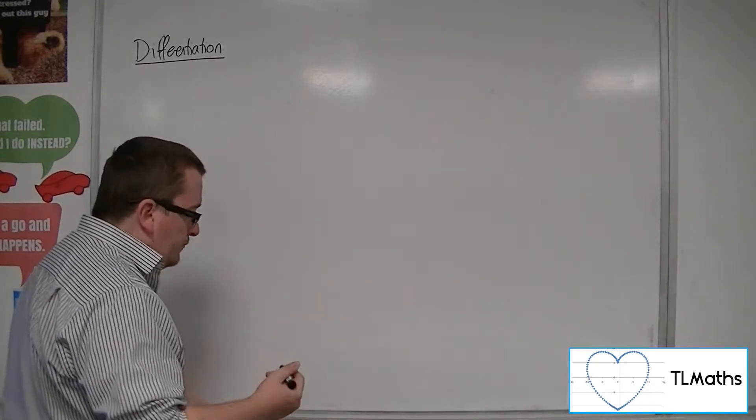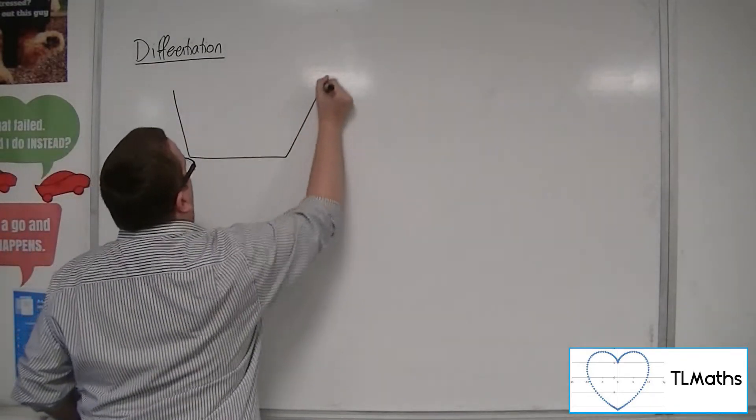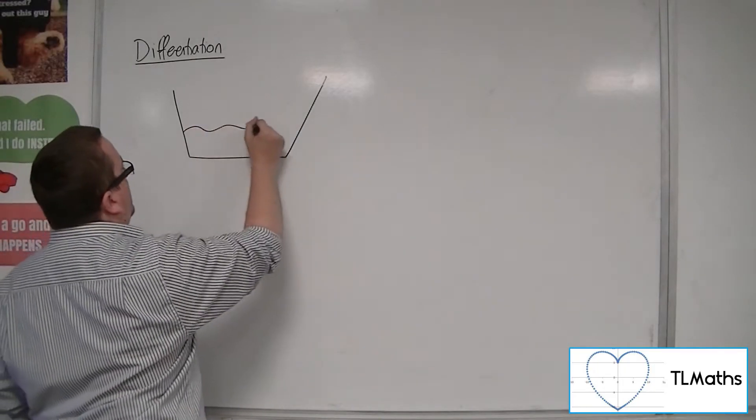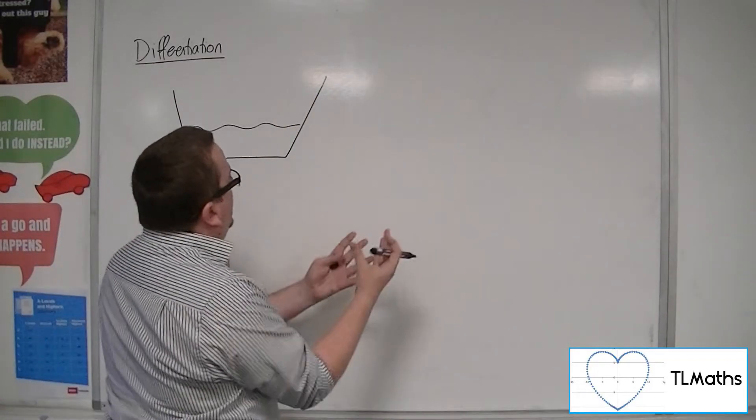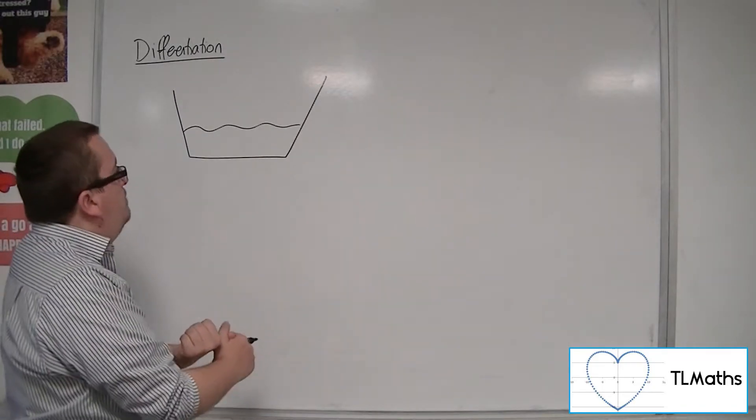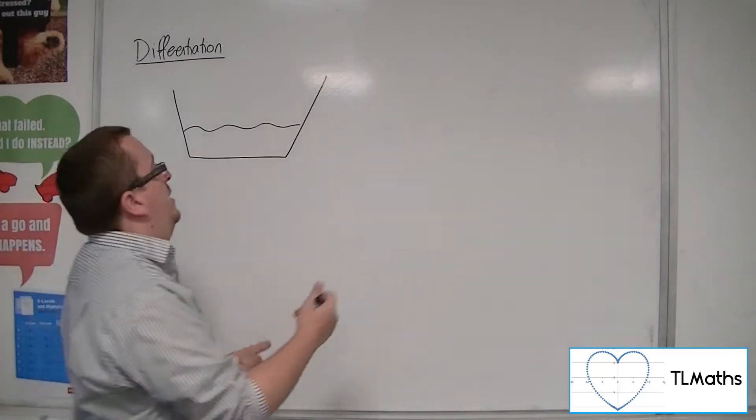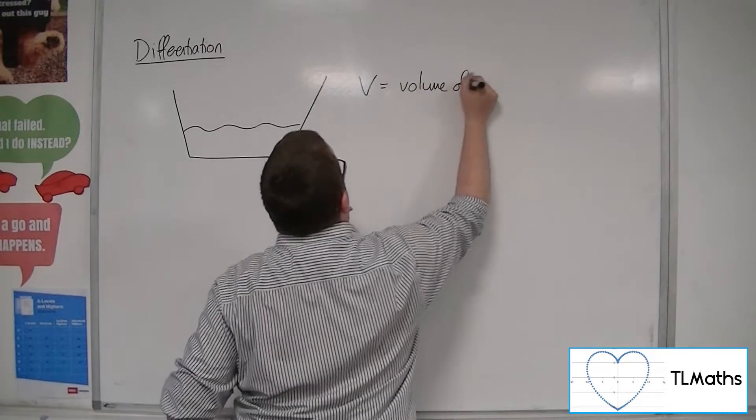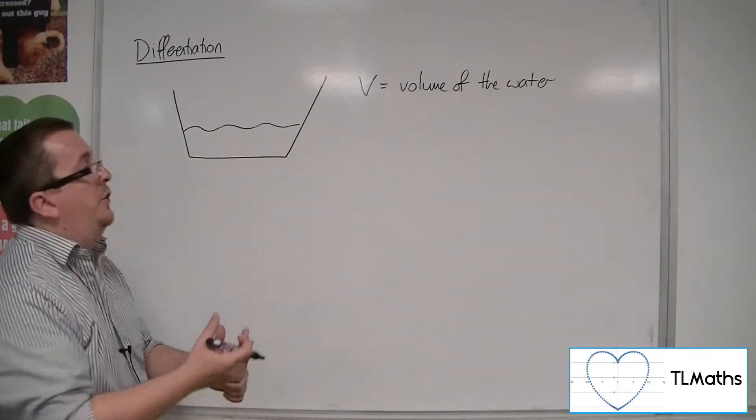For example, we might have some kind of bathtub which is being filled up with water. What we are looking at are three variables. One variable would be the volume of the bathtub. We might say that V is the volume of the water.